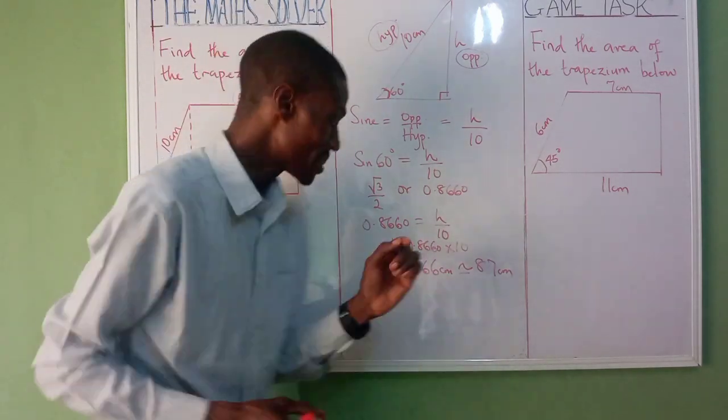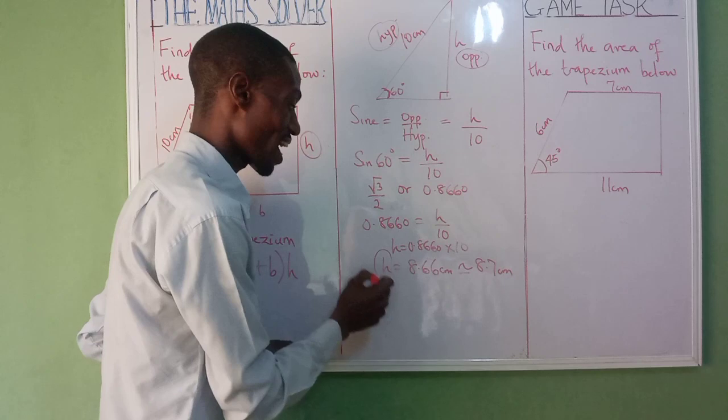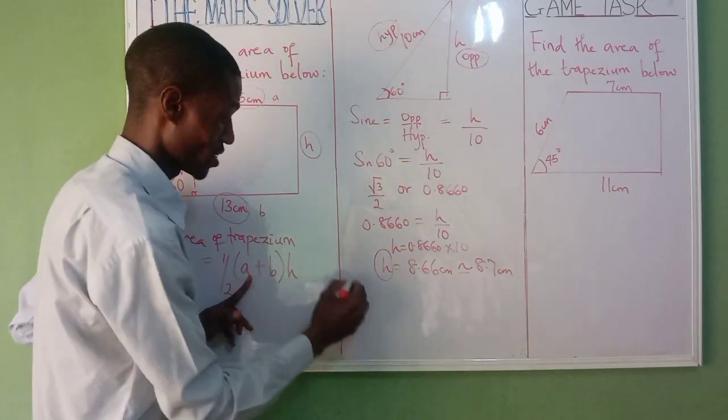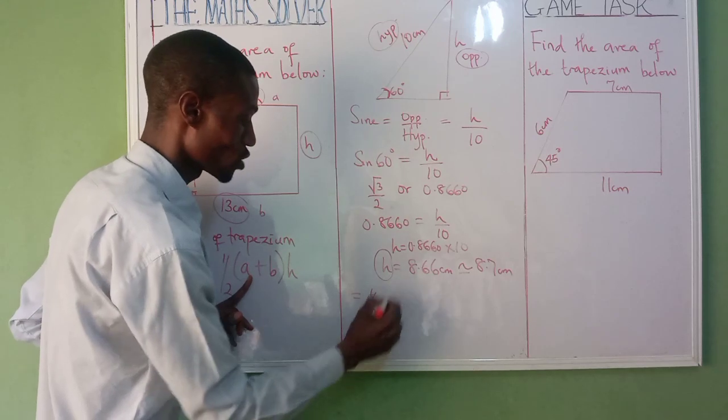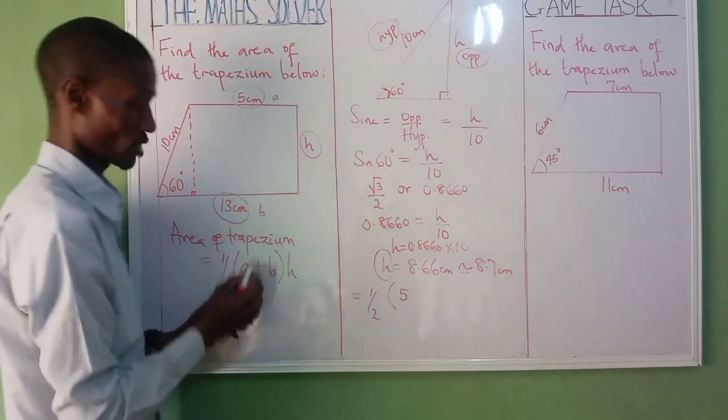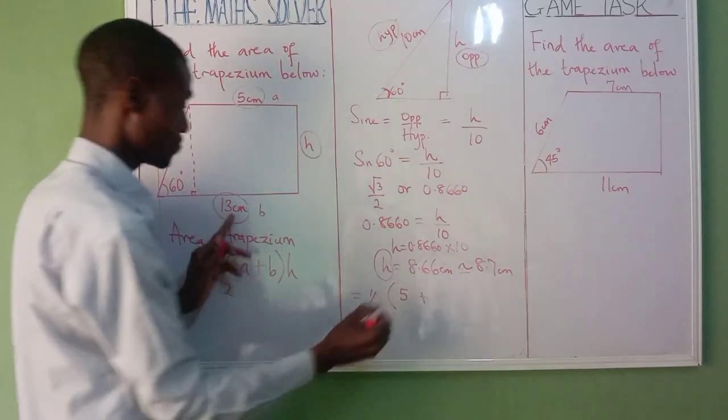Straightforward. Now we've gotten our height. Let's now insert it into the formula. So we have 1 over 2 into bracket - what's our a? Our a is 5, as you can see, plus our b is 13, times our height. We've gotten our height: 8.7.